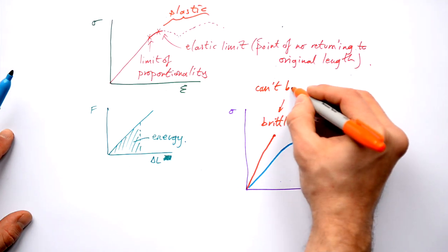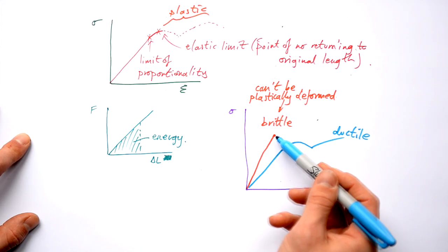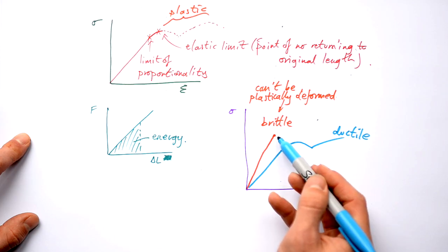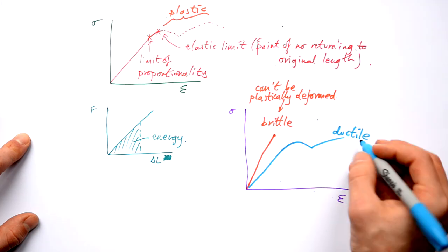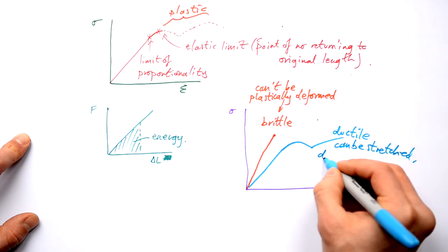Brittle can't be plastically deformed. In other words, once it reaches its limit of proportionality, then it just breaks. So that's going to be something like glass or ceramics. Something that's ductile, that could be copper or something, that can be stretched and it can be deformed plastically.